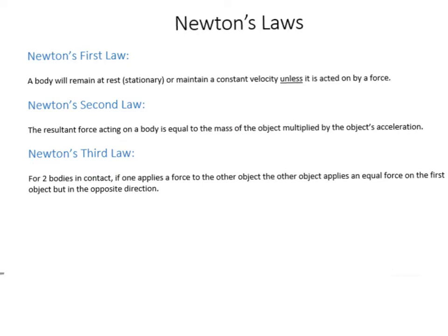Newton's third law is a little bit confusing. If you've got two objects in contact with each other — say a phone sitting on a desk, or two people pushing each other — if one applies a force to the other, the other one will apply an equal force but in the opposite direction. Your mobile phone sitting on your table is applying a weight force downwards, and the table is applying a normal contact force upwards to prevent it from falling to the centre of the earth.